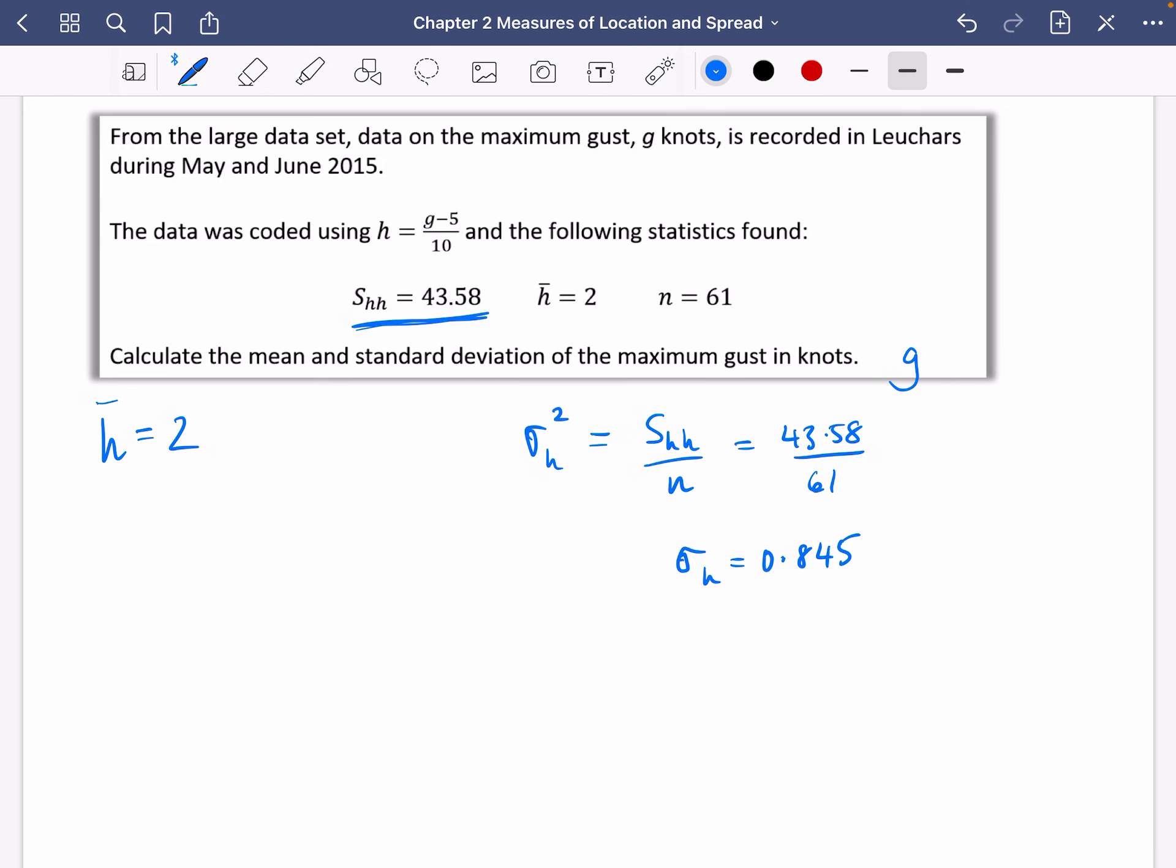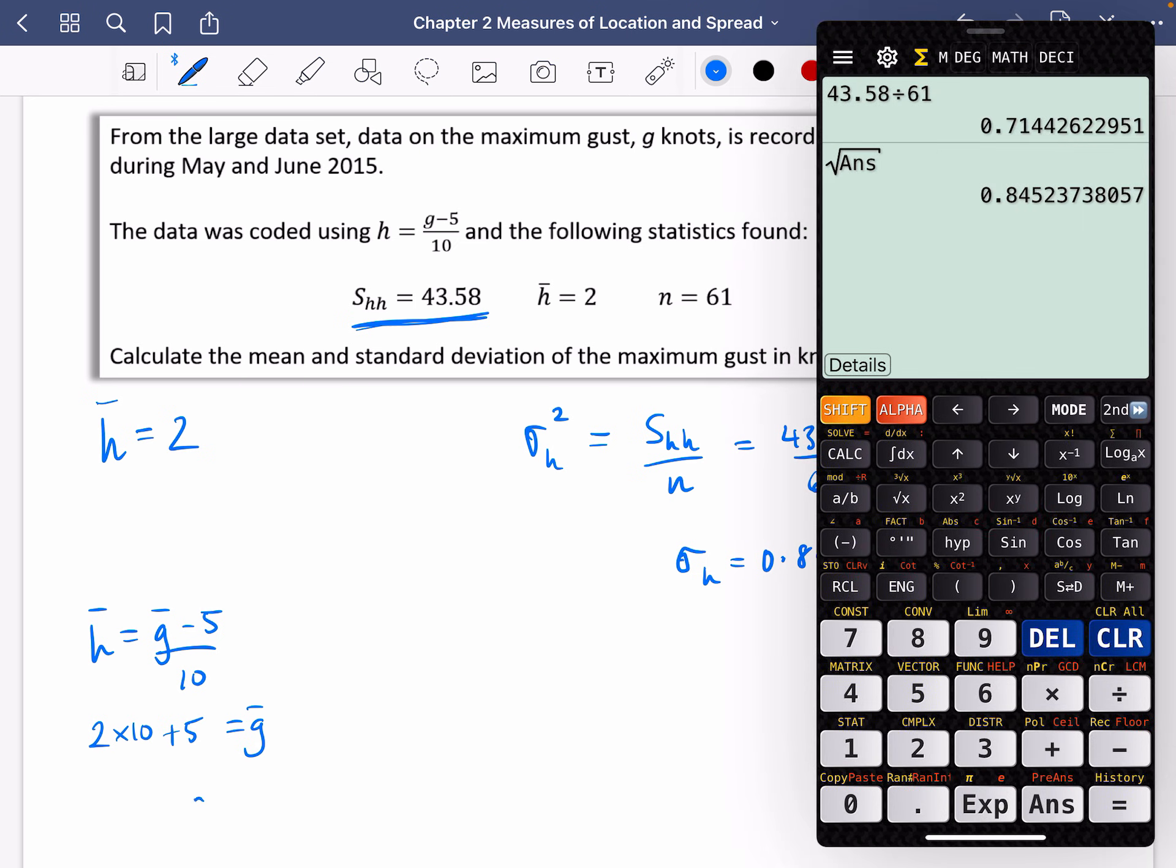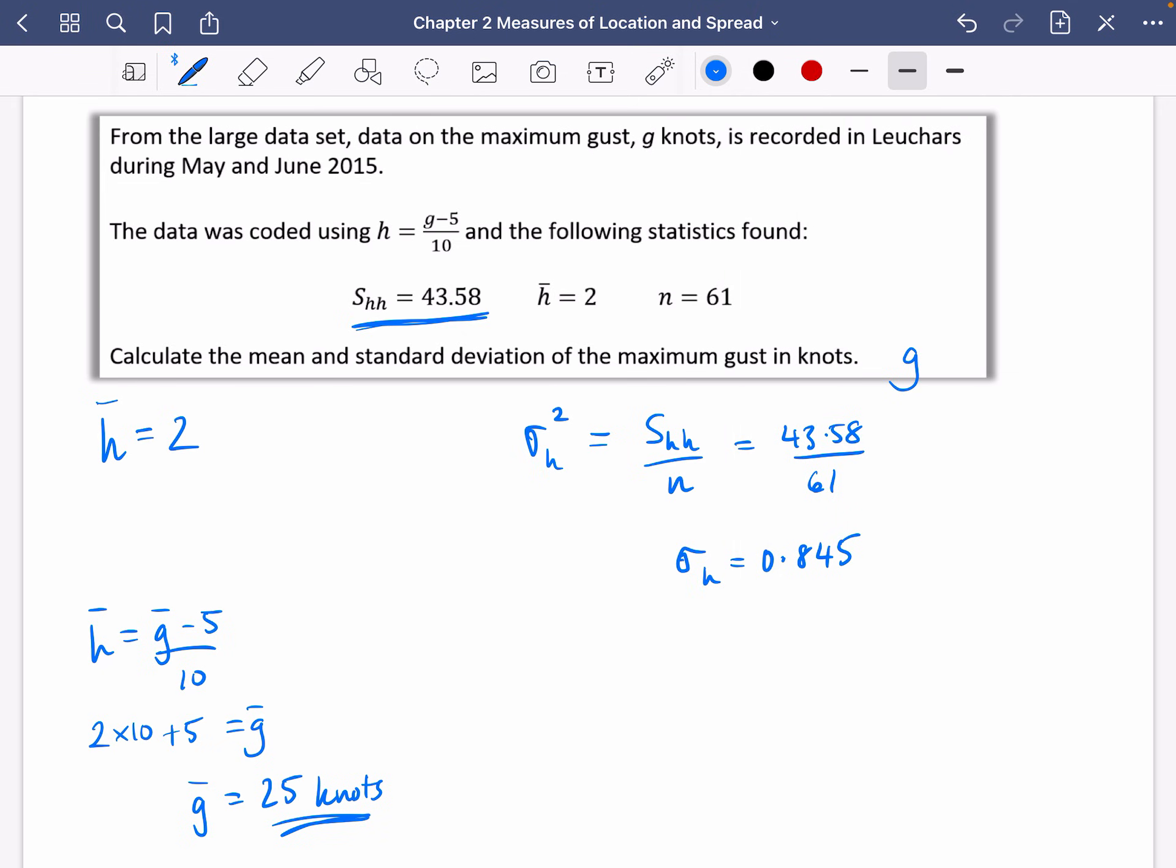So what we need to do now is find out what G-bar is going to be. Well, we know that H-bar is G-bar minus 5 over 10. So I'm going to do 2 multiplied by 10 plus 5 to find out what G-bar is. So that's going to be 25 knots. And I know for the standard deviation, that the standard deviation of H is just going to be the standard deviation of G divided by 10. So if I want to find out the standard deviation of G, I'm going to do the standard deviation of H and I'm going to multiply it by 10. So it's just going to be 0.845 times 10, which is 8.45 knots when multiplied by 10.